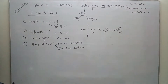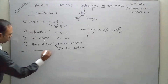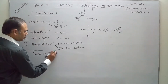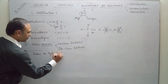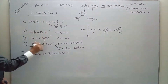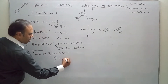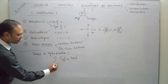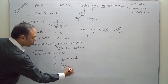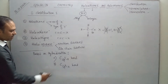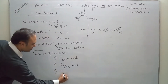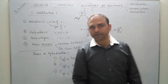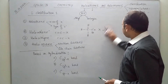We also have haloarenes, and within haloarenes we have nuclear substituted halogen derivatives and side chain substituted halogen derivatives. We will discuss all of these in detail. The next very important classification is based on hybridization.